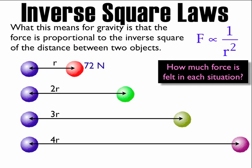I'll look at how much force is felt in each one. The first one is double the distance. The inverse of 2 squared is one-fourth. So I take one-fourth of my original force, which is 72 N, and that gives me 18 N.